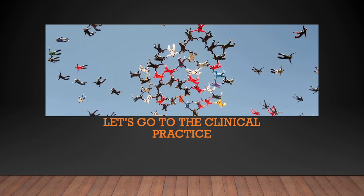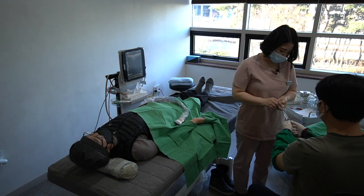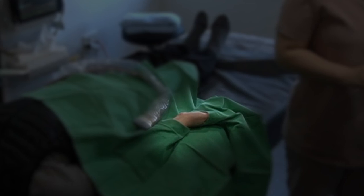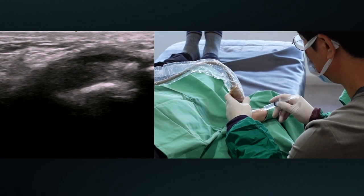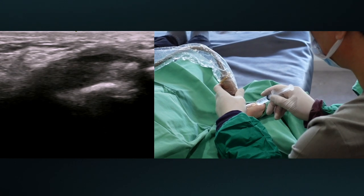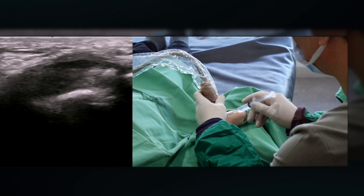Let's go to the clinical practice. Place the patient's hand in the palm-up position. Support the wrist from the back with a towel to extend the wrist. I infiltrate local anesthetic to the superficial area of the transverse carpal ligament and subcutaneous tissue.